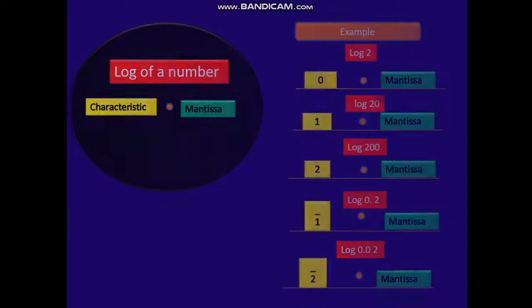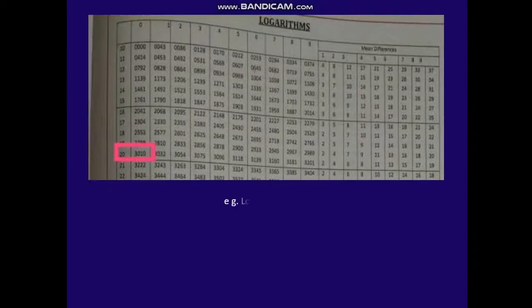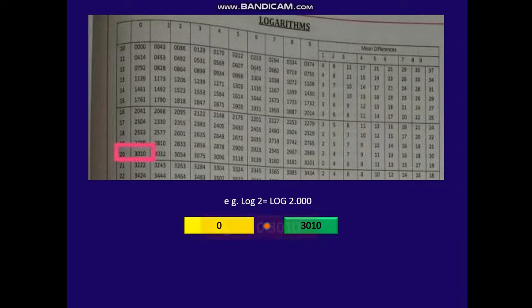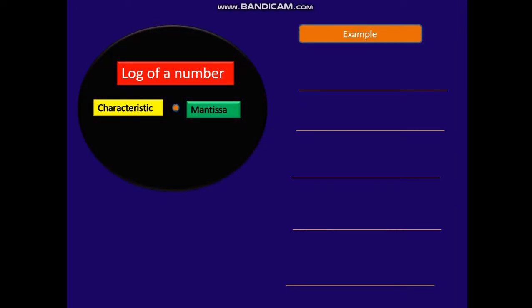Log of 0.02, that is bar 2. Likewise you can take the characteristic for any other number. Now let us see the common logarithmic table for the mantissa. Let us take 2 — so 2 is 2.000. We can take 20 and 0, which gives 3010. So we can write log of 2 as log of 2.000, that is 0 point the mantissa 3010 from the table. So log of 2 is 0.3010.